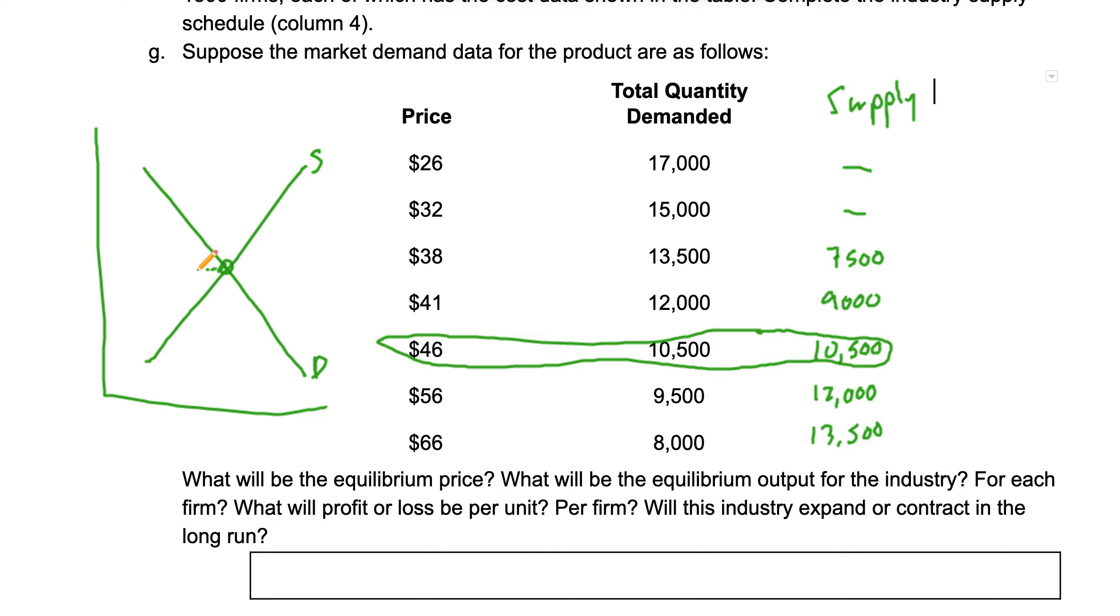So our market price is going to be $46. And the entire market is going to produce 10,500 of these things. So there you go.